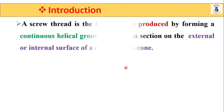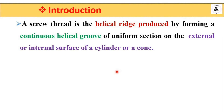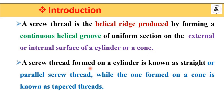A screw thread is a helical ridge produced by forming a continuous helical groove of uniform cross-section on the external or internal surface of a cylinder or a cone. A screw thread formed on a cylinder is known as a straight or parallel screw thread, while one formed on a cone is known as a tapered thread.